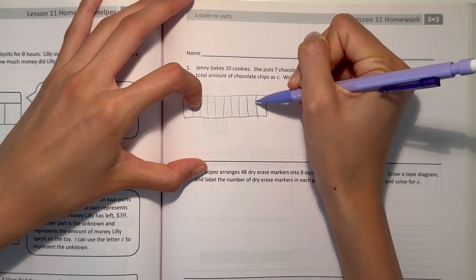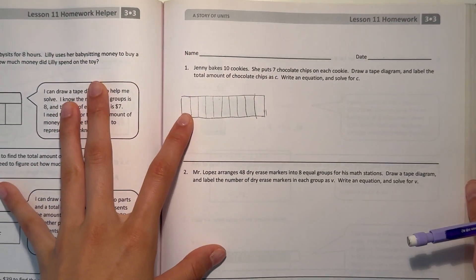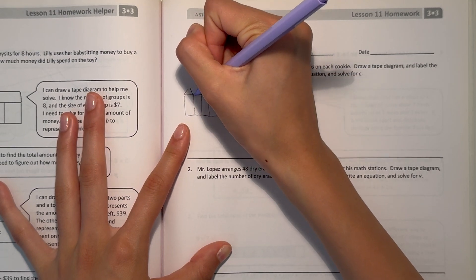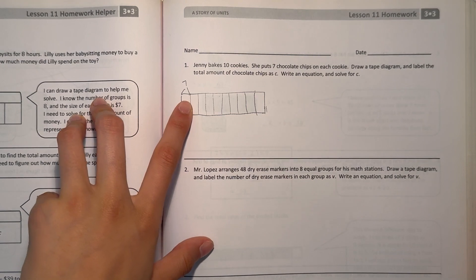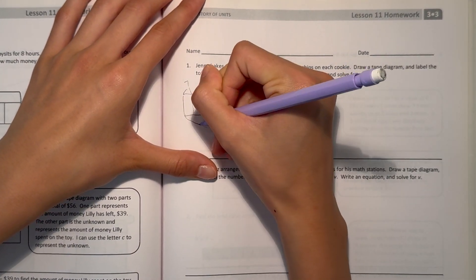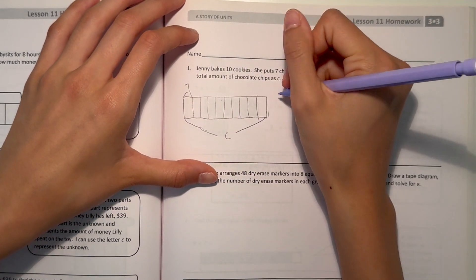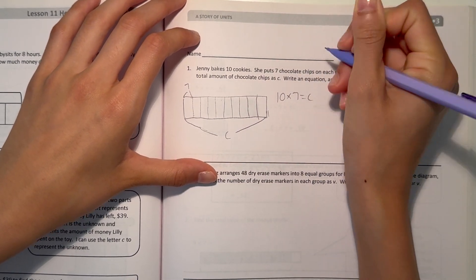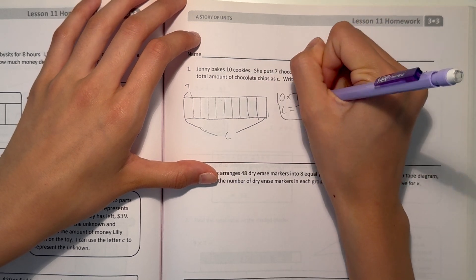Alright, so each of these little boxes represents a cookie. So we have 10 cookies here and 7 chocolate chips on each cookie. So then we can show that each little box has 7 chocolate chips. We want to find out how many chocolate chips there are in total, which is C. So 10 times 7 equals C. So then C equals 70.